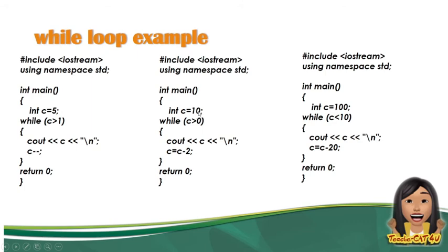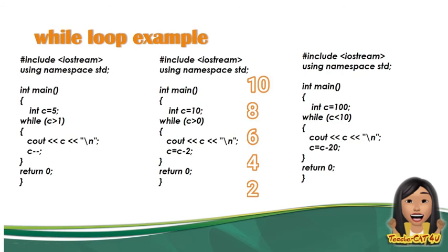Next na program: ang initialization niya ay 10. Ang condition niya ay C greater than 0. So 10 is greater than 0 — true yun — i-display niya ang 10. 10 minus 2, kasi decrement natin ay minus 2, magiging 8. Ang 8 ay mas malaki pa rin sa 0. Hanggang mag-minus ito ulit: magiging 6, magiging 4, magiging 2. 2 minus 2 is equal to 0, and 0 is not greater than 0. Kaya magiging output dito ay 10, 8, 6, 4, 2.